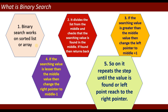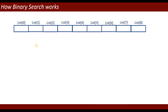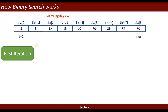It repeats these steps until the value is found or the left pointer reaches the right pointer. To illustrate how binary search works, suppose I have a list from index zero to index eight — that means nine total elements: 5, 8, 12, 15, 27, 30, 36, 52, and 60. Now I want to search for the key 52.